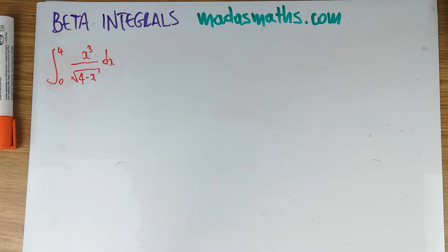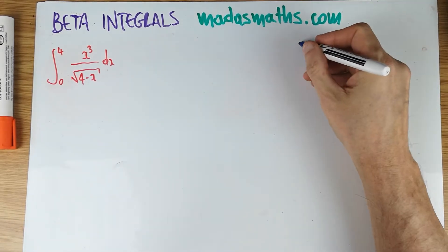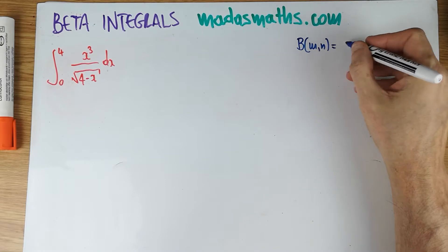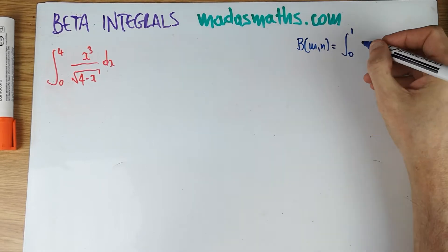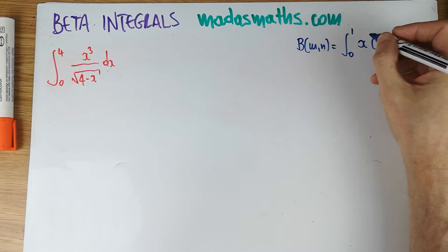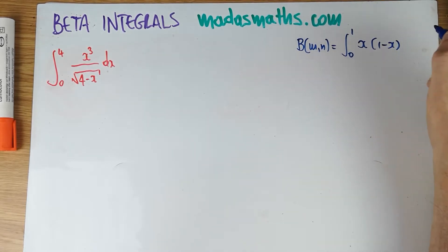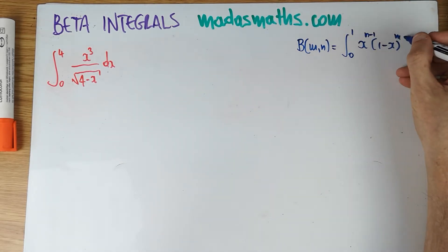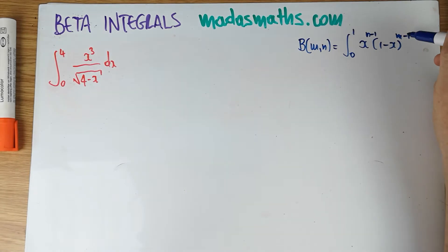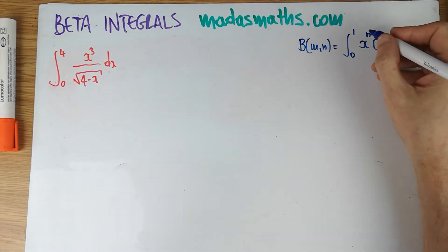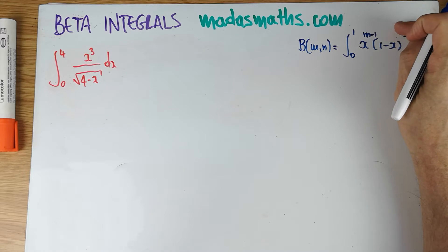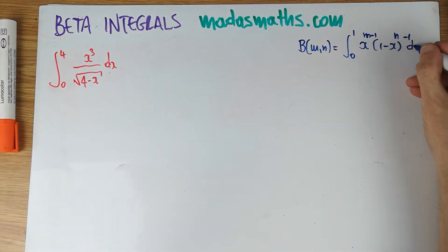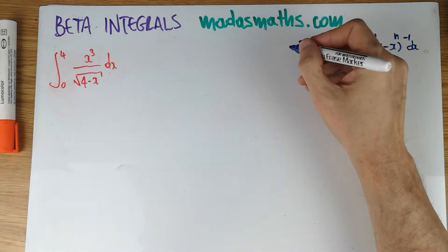So what results we need to be having in here? We need to actually have the definition of the beta function. Let's write it here. The beta of m, n is of course the integral from zero to one x to the m minus one times one minus x to the n minus one. And remember the trigonometric we have two n minus one and two m minus one. Here we simply have of course n minus one and m minus one. That's the definition of the beta function.